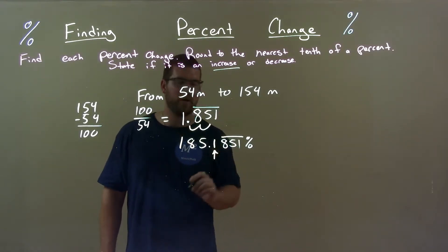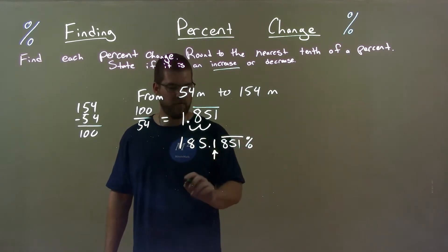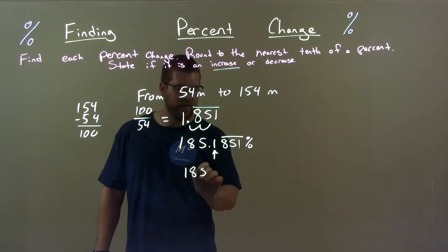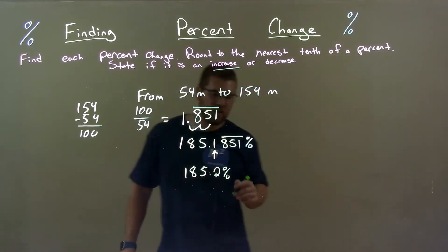Now we've got to round this. Look at the 1 to its right. We see an 8. 8 causes the 1 to go up to 2, my favorite number: 185.2 percent. Already said that this was an increase.